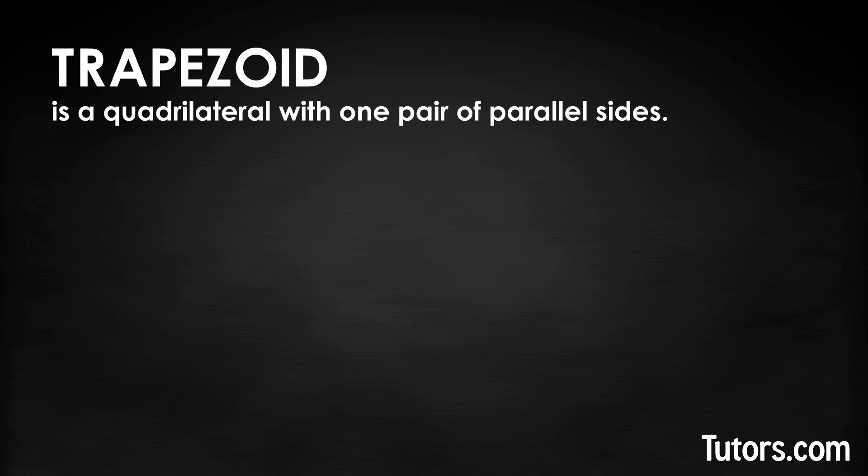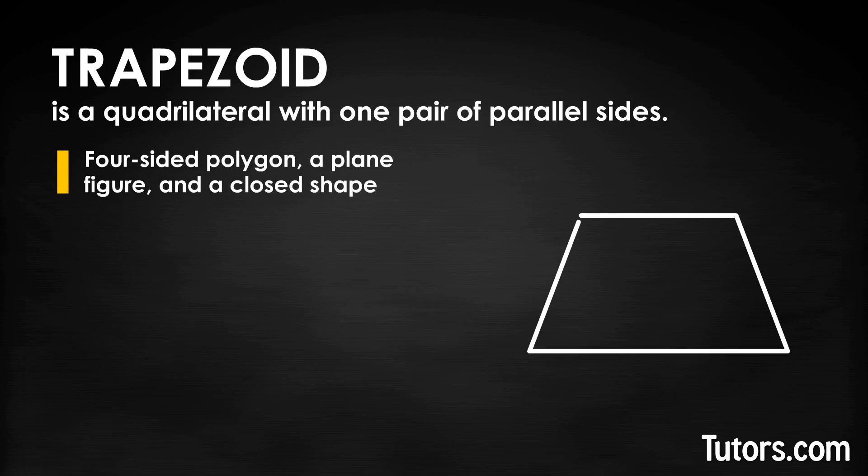Let's begin. What is a trapezoid? A trapezoid is a quadrilateral with one pair of parallel sides. So this four-sided polygon is a plain figure and a closed shape. It has four line segments and four interior angles.